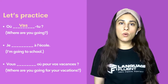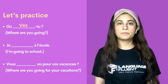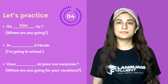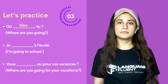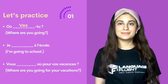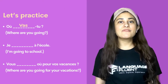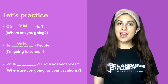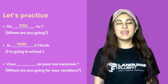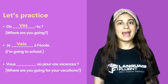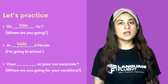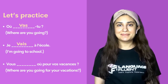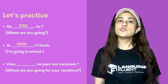The next one: Je ___ à l'école. Since we have je as our subject, the conjugation is vais. And we have: Je vais à l'école. Remember to lower down your pitch because it's a sentence. Je vais à l'école.